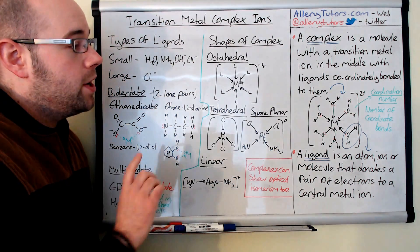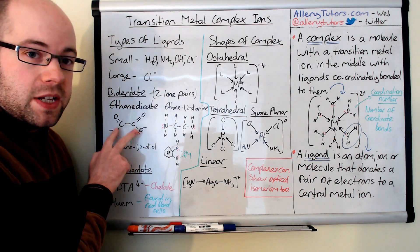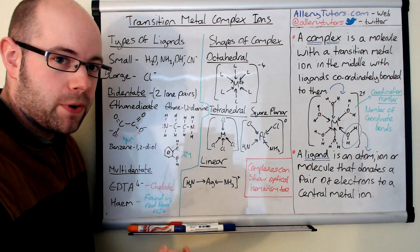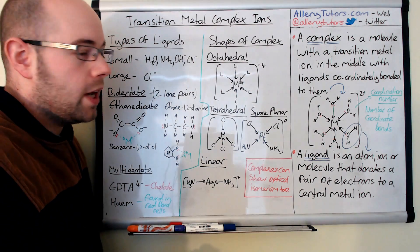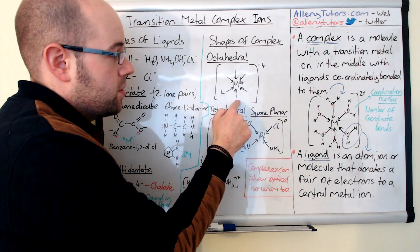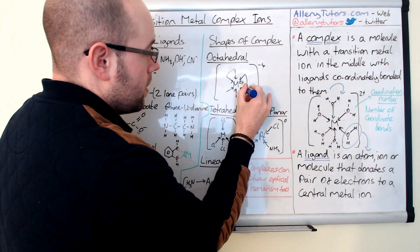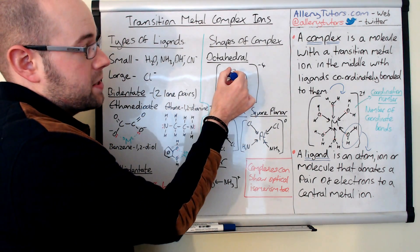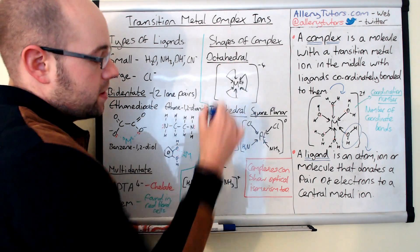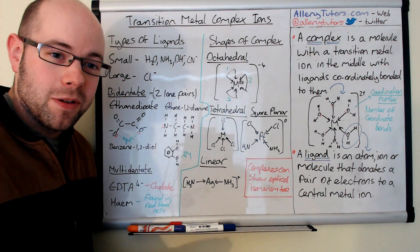Just one final point about bidentate ligands: because they bond twice, they take up the space of two monodentate ligands. So if you're using bidentate ligands in an octahedral complex, you can only fit three of them around the metal, since each bonds twice — that's three bidentate ligands occupying six coordinate bond positions. Hope that helps. Bye.